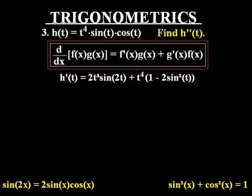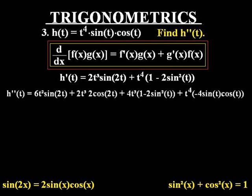We need to find the second derivative of h. So we're going to go through this pretty quickly following the same procedures as we've done before and utilizing the product rule, and we will eventually get to the final result, which is, first step, 6t squared sine 2t plus 2t cubed 2 cos 2t plus 4t cubed multiplied by 1 minus 2 sine squared t plus t to the power 4 multiplied by negative 4 sine t cos t.